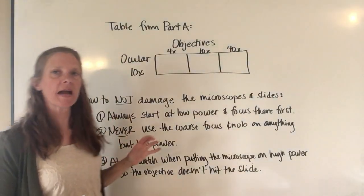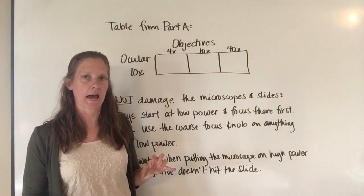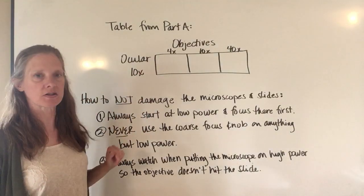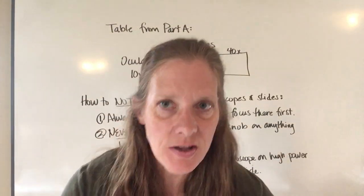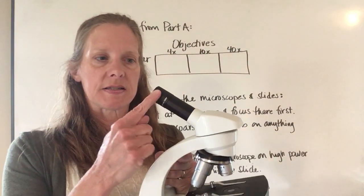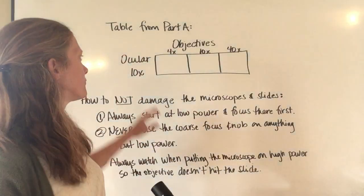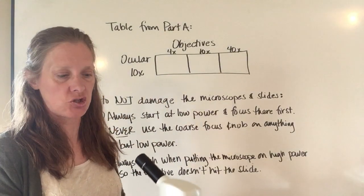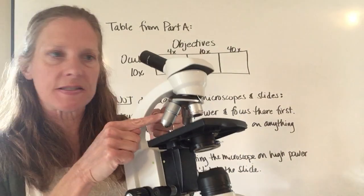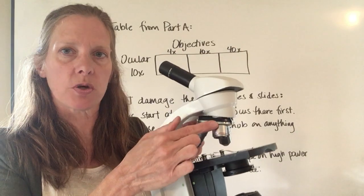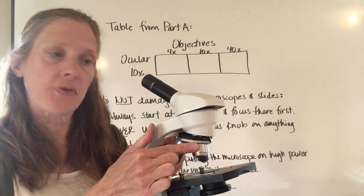It will tell you what magnification you're looking at with each different objective. The ocular of the microscope is this piece right here; by itself it provides 10 times magnification. These pieces down here are called the objectives. The shortest one magnifies 4 times.